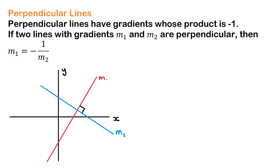The next thing we're going to look at is perpendicular lines. These are lines with gradients whose product — remember, product means multiplication — is negative one. So if two lines with gradients m1 and m2 are perpendicular, then m1 equals negative one over m2, or equivalently m1 times m2 equals negative one. The two lines cross at right angles, forming 90 degrees at that point.